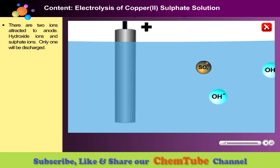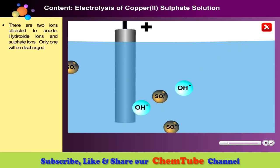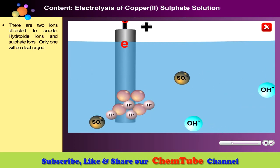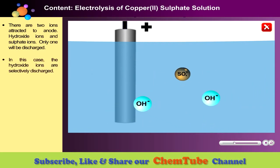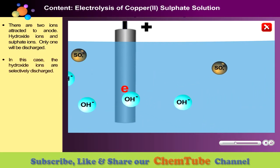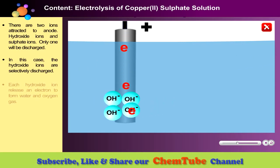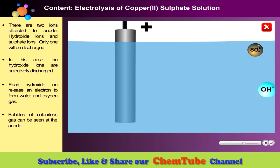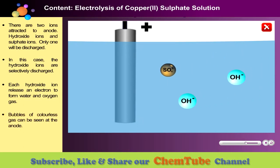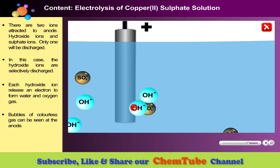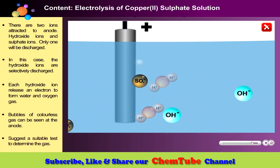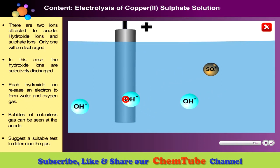There are two ions attracted to the anode: hydroxide ions and sulphate ions. Only one will be discharged. In this case, the hydroxide ions are selectively discharged. Each hydroxide ion releases an electron to form water and oxygen gas. Bubbles of colourless gas can be seen at the anode. If the gas is collected, can you suggest a suitable test to determine the gas?